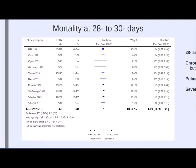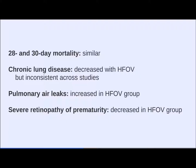Although mortality was similar, the Cochrane review found that chronic lung disease was decreased with the oscillator — though inconsistently across studies. Pulmonary air leaks were increased with the oscillator, which carries a slight negative connotation, but air leaks are not a contraindication to using the oscillator — you simply adjust frequencies and amplitudes accordingly. Interestingly, severe retinopathy of prematurity was also decreased in the oscillator group, though the etiology for that is unclear.